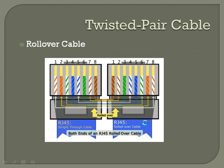A rollover cable is where you completely swap the ends — pin one goes to pin eight on the other end, pin two goes to pin seven, and so on. Rollover cables are used inside Cisco console cables. Cisco console cables come in two flavors: one with an RJ45 on one end and a DB9 on the other, and one with two RJ45 connectors. The rollover wiring is what's happening inside both types.